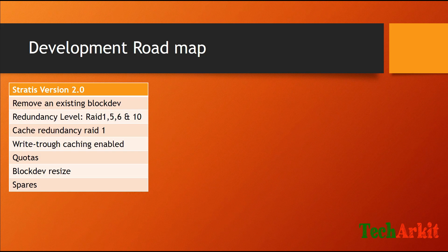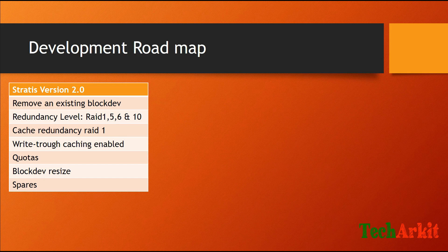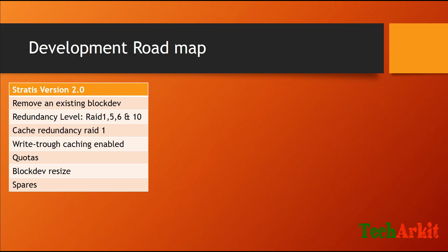The development roadmap for version 2 includes: removing an existing block device from the pool — for example, removing a faulty device or adding a new one. RAID 1, RAID 5, RAID 6, and RAID 10 redundancy will be supported. Cache redundancy is also planned so that in case of cache failure, performance is not impacted. Write-through caching and quotas are also coming in version 2.